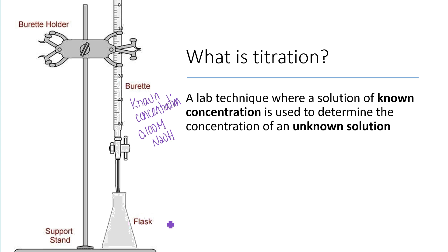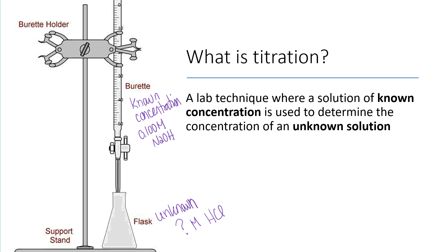Down here in the flask is usually where we put the unknown solution. We might not know the identity, or maybe we know the identity but we don't know the molarity. For example, maybe we know that this is hydrochloric acid, but we don't know what the concentration is. Titration is going to allow us to figure out what the concentration of our unknown is.